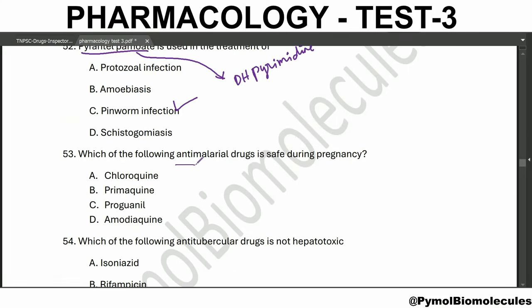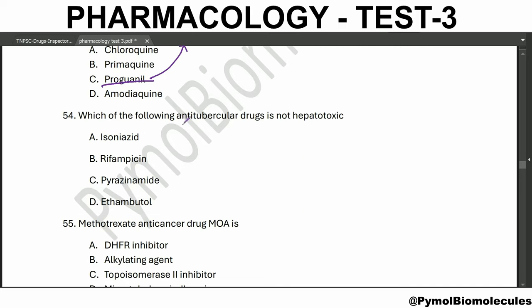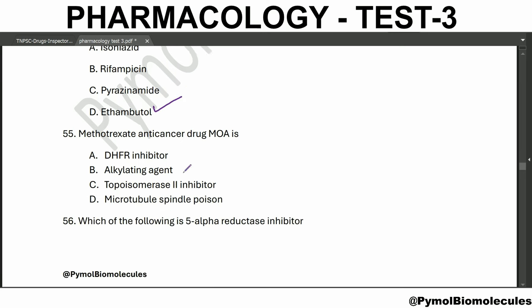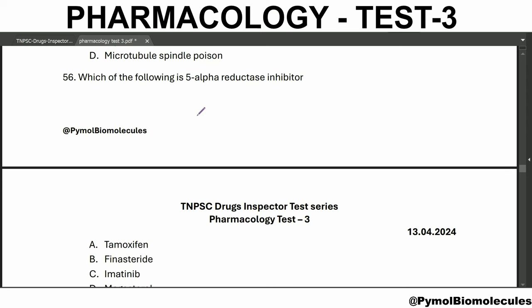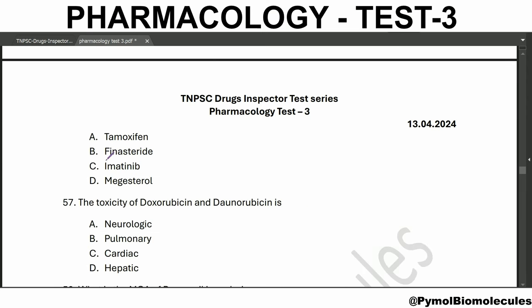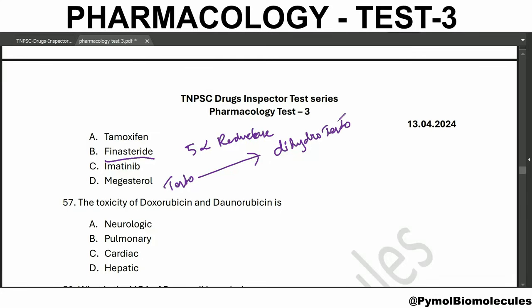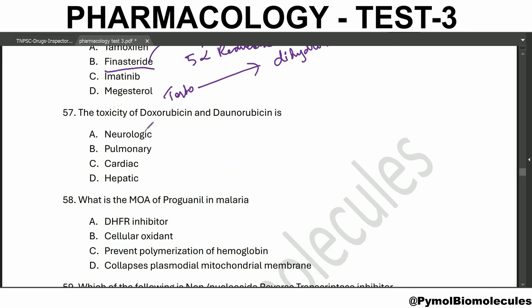Which antimalaria drug is safe during pregnancy? Proguanil - that is safe during pregnancy. Which antitubercular drug is not hepatotoxic? Ethambutol - that is not hepatotoxic. Methotrexate, an anticancer drug, mechanism of action is DHFR inhibitor - dihydrofolate reductase inhibitor. The five-alpha reductase inhibitor is finasteride, used in the conversion of testosterone to dihydrotestosterone.